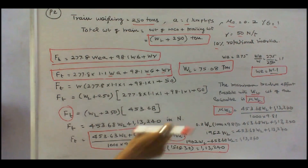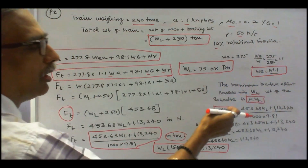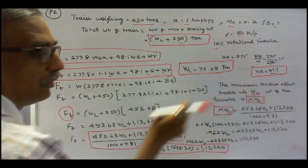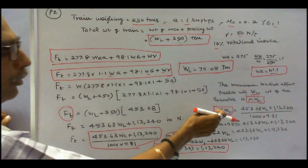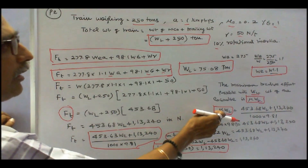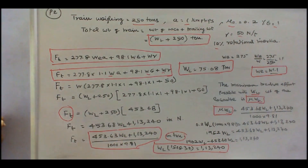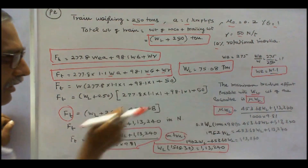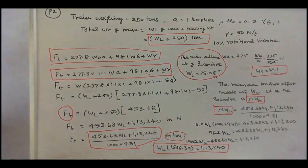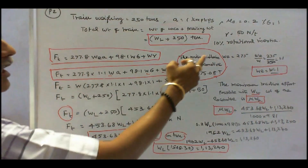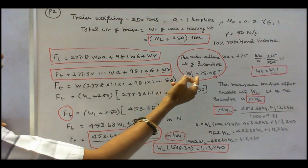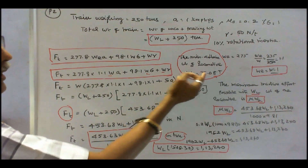We know that the maximum tractive effort possible equals coefficient of adhesion into locomotive weight WL. Therefore mu into WL equals Ft. With mu equal to 0.2, substituting and solving for WL gives WL equal to 75.08 tons. The answer is that the minimum adhesive weight of the locomotive, W suffix L, is equal to 75.08 tons.